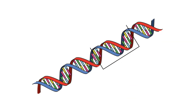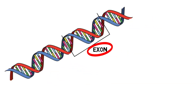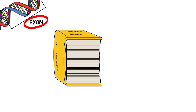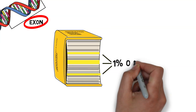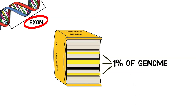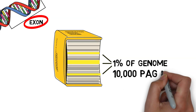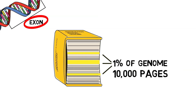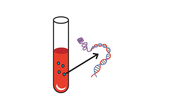Genes are made up of many parts, but the exon is a part of the gene that, if altered or changed, can cause a person to develop specific health problems. All the exons together are called the exome. The exome makes up about 1% of our entire genome. This 1% would still represent 10,000 pages of our million-page book. Because Jimmy's family agreed to have him tested, a sample of his blood was sent to the lab for whole exome sequencing.